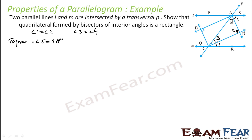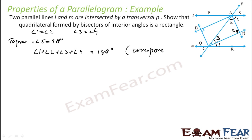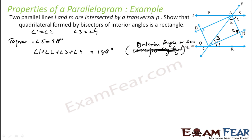Angle 1 plus angle 2 plus angle 3 plus angle 4 is 180 degrees. Angle 1 plus 2 is one angle, and 3 plus 4 is another angle. These are interior angles on the same side of the transversal. Since lines L and M are parallel, interior angles on the same side sum to 180 degrees.